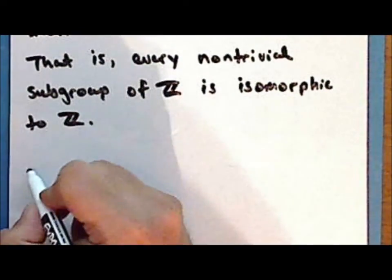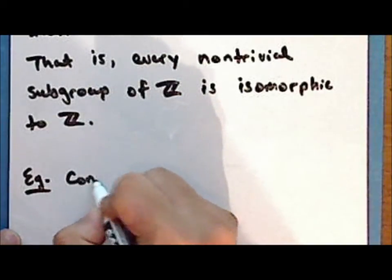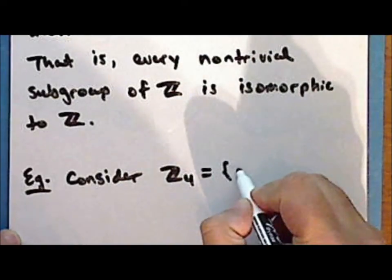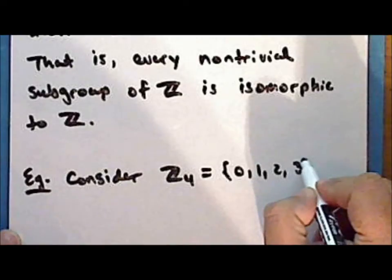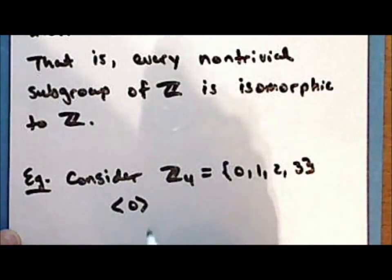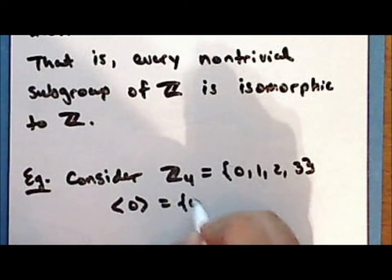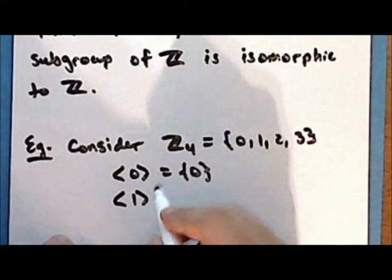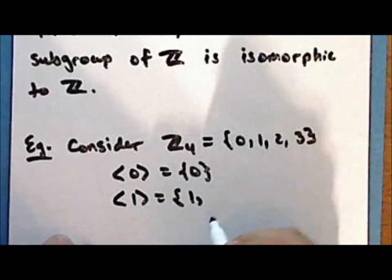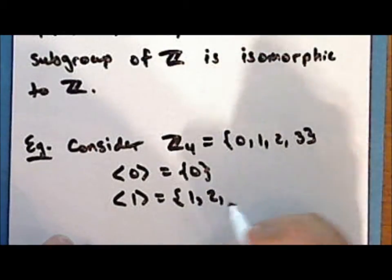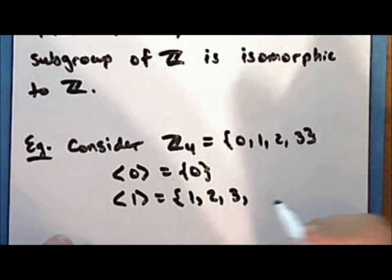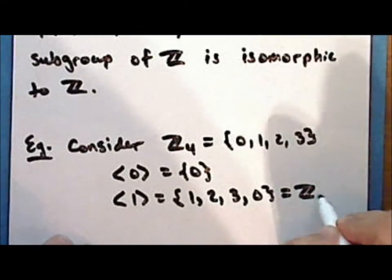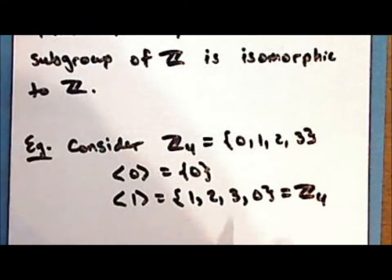Let's look at some finite groups. Consider the integers modulo 4 under addition modulo 4. If we look at the subgroup generated by the identity, then this is the trivial subgroup. If we look at the subgroup generated by 1, then this is the group which has the element 1, 1+1=2, 2+1=3, and 3+1=0 modulo 4. So this is the entire group of integers modulo 4, and so this is a cyclic group.